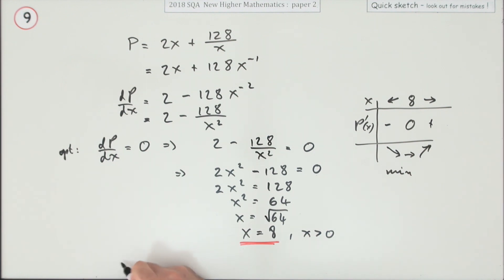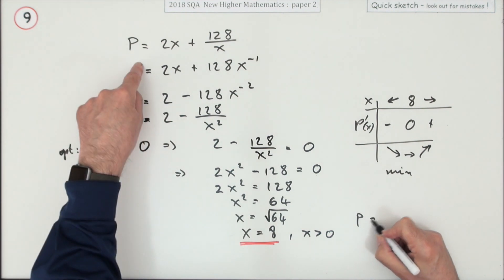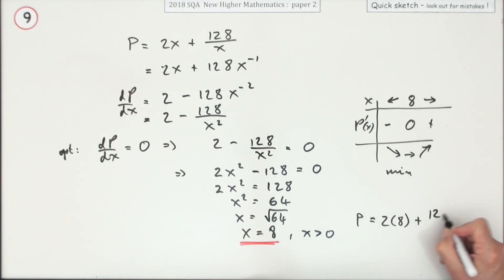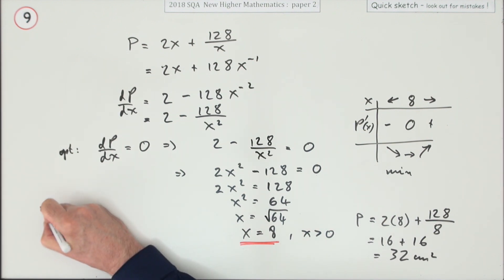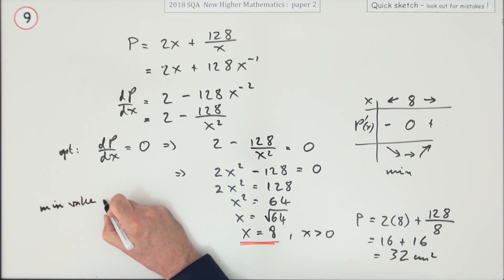Minimum. If they want that, we've defined the value of that minimum. So if x is 8, P is going to equal 2 times 8 plus 128 divided by 8, that's 16 plus, and that'll be 16 again, that's 32, and that's centimeters. So I'll just put that down: minimum value of P equals 32 centimeters, and it's not an area, it's a perimeter, centimeters. It doesn't ask for this, but when x equals 8 centimeters.